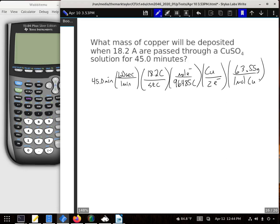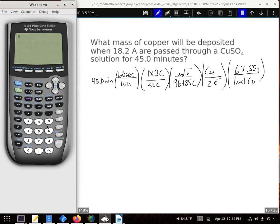All right, we're just plugging this into our calculator now. So 45 times 60 times 18.2 divided by Faraday, 96,485, also divided by two, and then times 63.55 gives us...